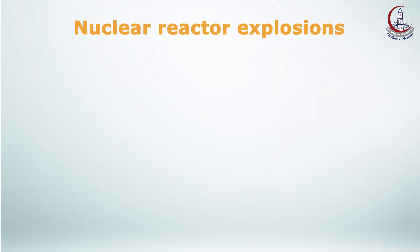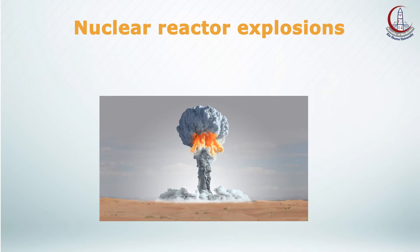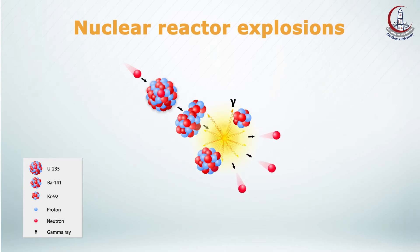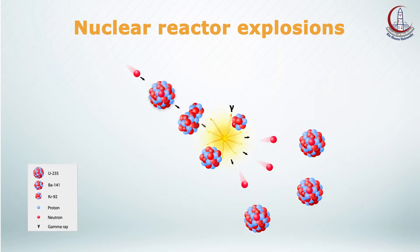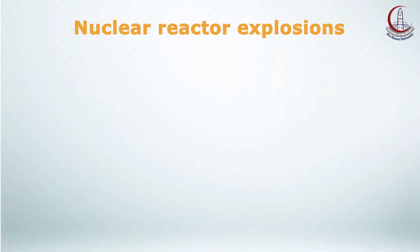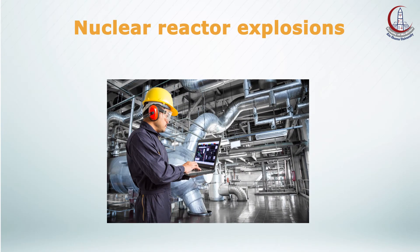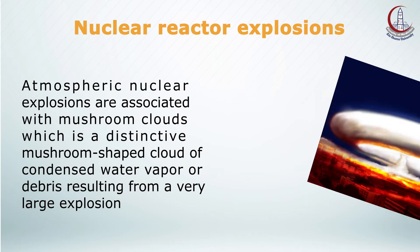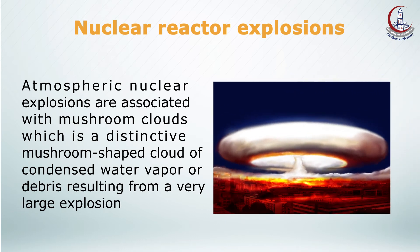Regarding the nuclear reactor explosion, it occurs as a result of either a rapid release of energy from an intentionally high-speed nuclear reaction, which may occur for destruction purposes as in nuclear wars, or when a nuclear reactor is not properly maintained, or when there is a structural failure of some critical component of the reactor, which we call meltdown. Atmospheric nuclear explosions are associated with mushroom clouds — a distinctive mushroom-shaped cloud of condensed water vapor or debris resulting from a very large explosion.